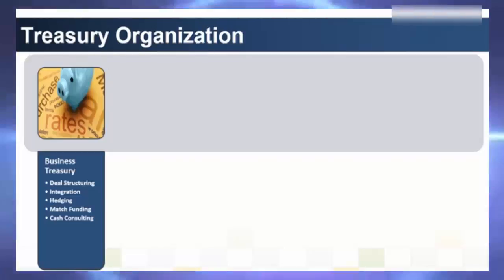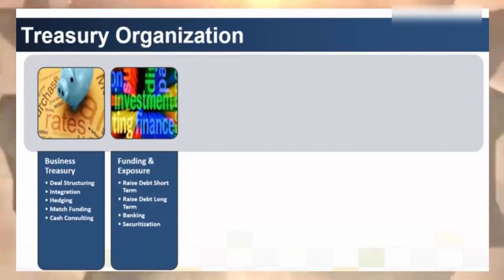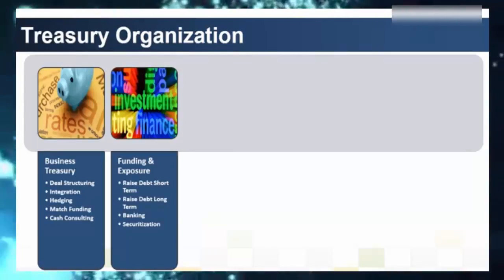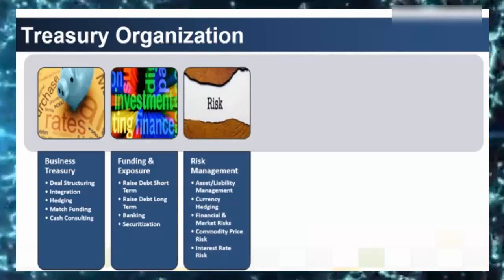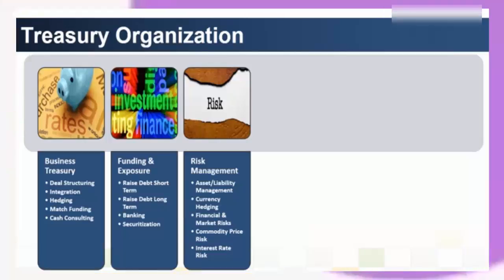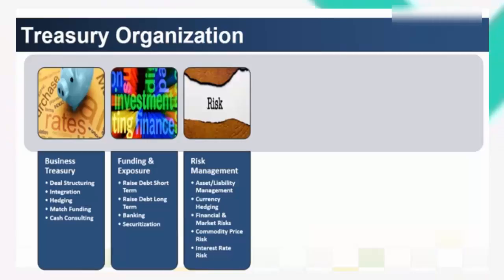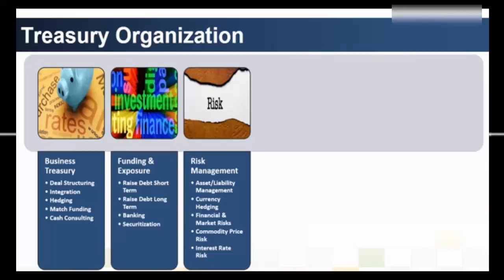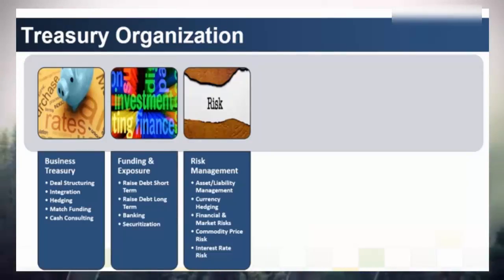Funding and exposure management acts as the face to the market, with main responsibilities including raising short-term and long-term debt, banking and securitization. It manages external funding and debt and also handles internal funding requirements through inter-company loans and transfers. Risk management centralization is ongoing, especially for risk and cash management, with broadening responsibilities including group payments and collections, insurance and group credit risks. Main responsibilities include risk management, asset and liability management, and interest rate and currency hedging.